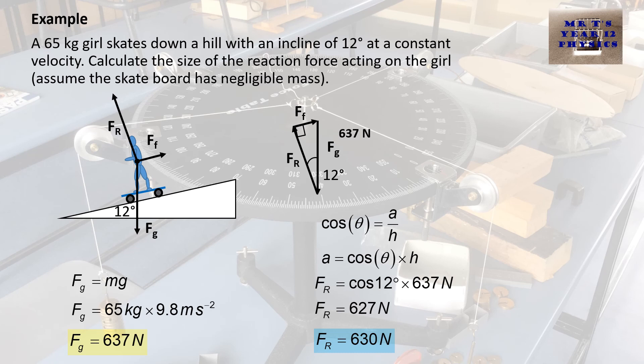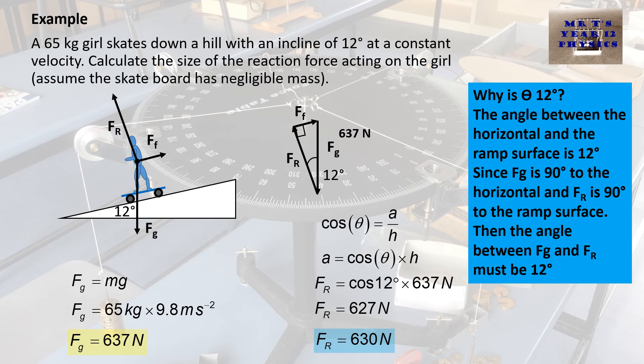Now, one thing that people often have a question about is, why is it that this is 12 degrees? Why is this angle 12 degrees? Well, it so happens that the angle between the horizontal and the ramp here is 12 degrees. Because the gravity force is 90 degrees to the horizontal, and the reaction force is 90 degrees to the ramp surface, because they're both 90 degrees to these two, they must be the same angle difference between the reaction force and gravity as the horizontal and the surfaces. So when the angle theta is 12 degrees, the angle between the horizontal and the ramp surface is 12 degrees. That's why this is 12 degrees.